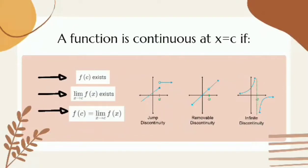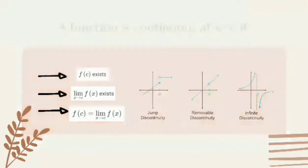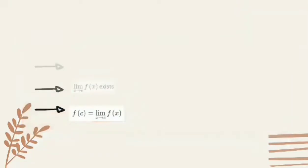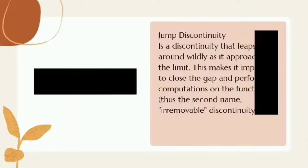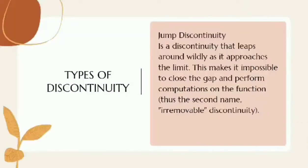Here is the example of the graph of discontinuities. What is jump discontinuity? It is a discontinuity that jumps around wildly as it approaches the limit. This makes it impossible to close the gap and perform computations on the functions. Thus, its second name: a removable discontinuity.